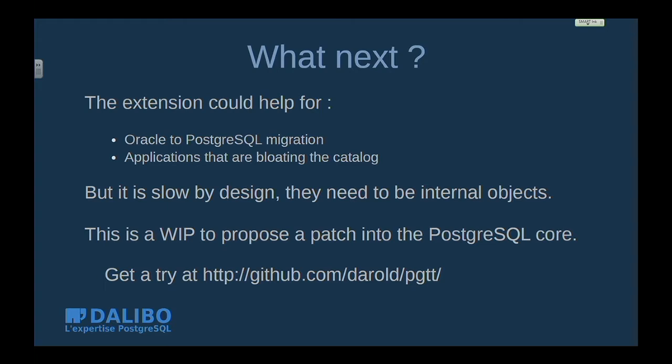The rows cannot be removed by the backend directly — it would be too slow. So there is a background worker that connects to each database and removes obsolete rows per session or per transaction. The background worker has a default 5-second sleep interval, but you can tune this. This extension could be very helpful for Oracle-to-PostgreSQL migrations, since global temporary tables are often found in Oracle databases. It can also help if an application creates and drops too many tables, causing catalog bloat.